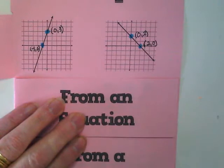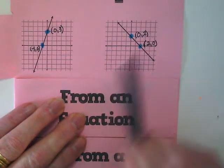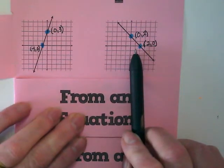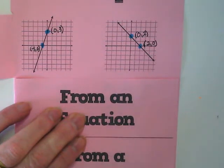That's important as we move forward with our work today that we recognize that in coordinate pairs for x and y-intercepts, one of the numbers is always a 0.